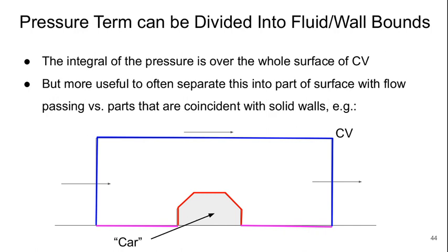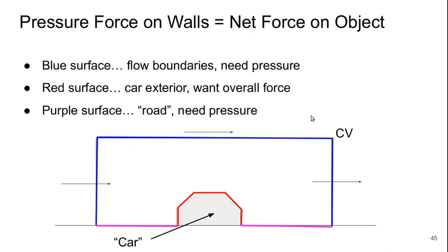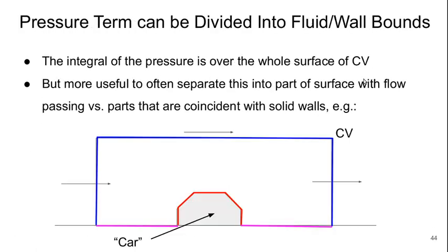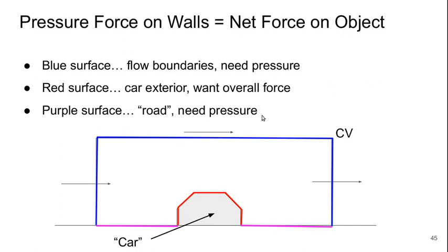The pressure term can be usefully divided into fluid and wall boundary regions. In the equation on the previous slide, the integral of the pressure is over the whole surface of the control volume. But it's more useful to often separate this into a part of the surface where the flow is passing—the blue boundaries here—versus the parts that are coincident with solid walls, like the purple and red parts here, where this is some kind of car in a control volume. The pressure force on the walls gives us the net force on the object. The blue surfaces are the flow boundaries where we need to know the pressure. The red surface is the exterior of our car, and what we want really is the overall force acting on that. The purple surface is the road, and we need the pressure there too. Although, as we'll see, it won't contribute to something like the drag force because of the direction in which it acts.